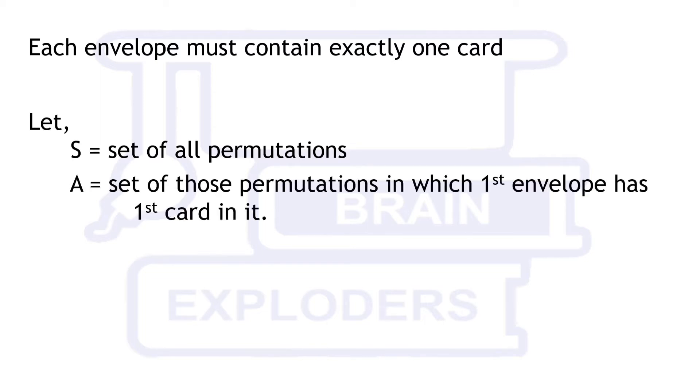A is the set of permutations in which first card is always present in first envelope and rest cards may or may not be present in the envelope of the same number.